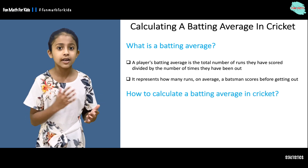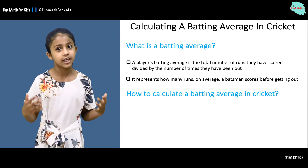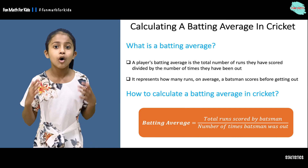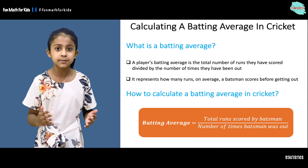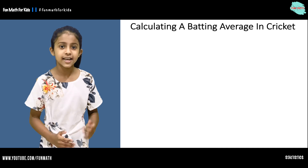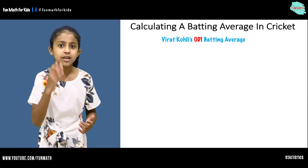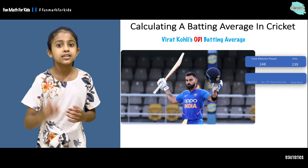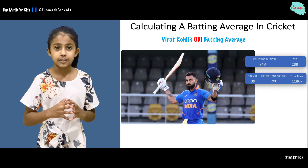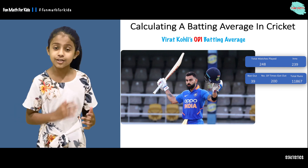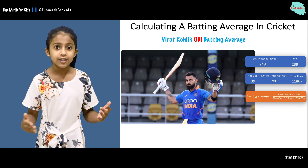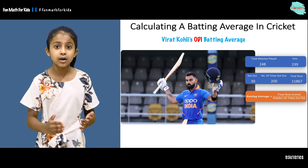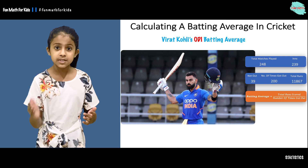Let's understand how to calculate the batting average in cricket. This is nothing but just the total runs scored over the number of times the batsman was out. Here we have Vera Coley's batting record, and to find his batting average we are going to use the batting average formula, which is the total runs he has scored over the number of times he has got out.